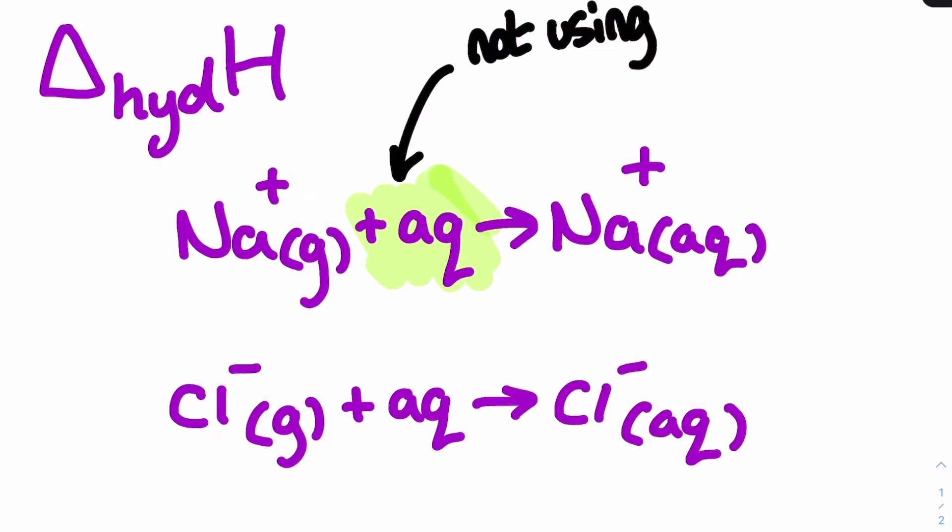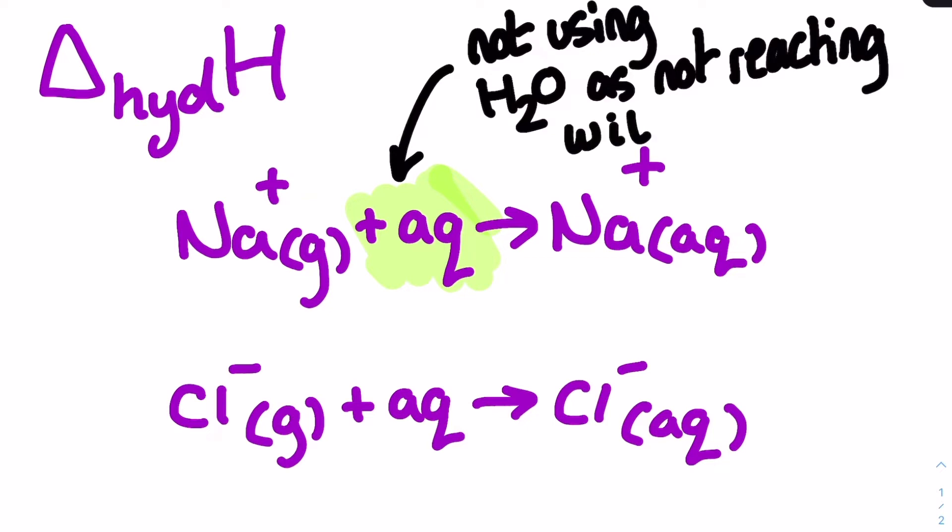The equations that you can see on screen now which represent the definitions are actually quite straightforward. The only weird little quirk is that instead of showing H2O in the equation we show AQ, the aqueous state symbol, as this represents us dissolving the gaseous ions in water.